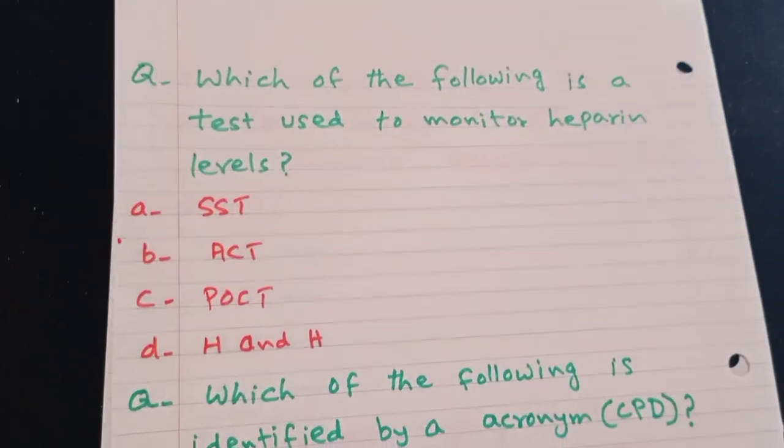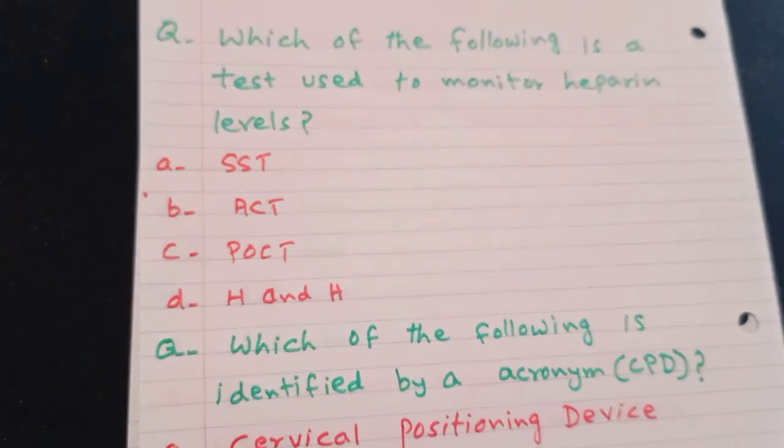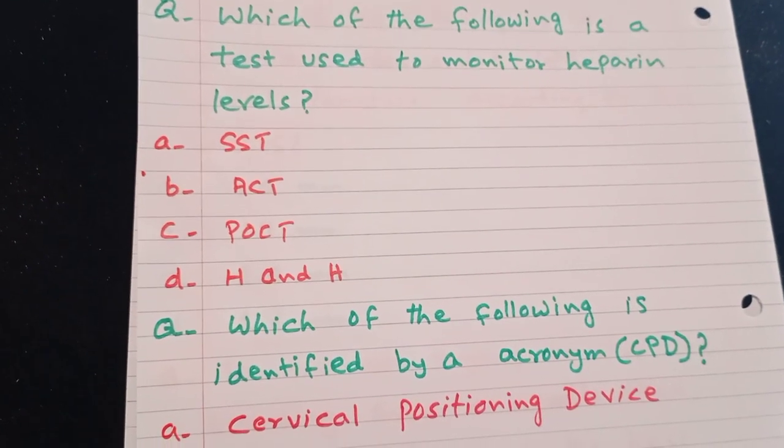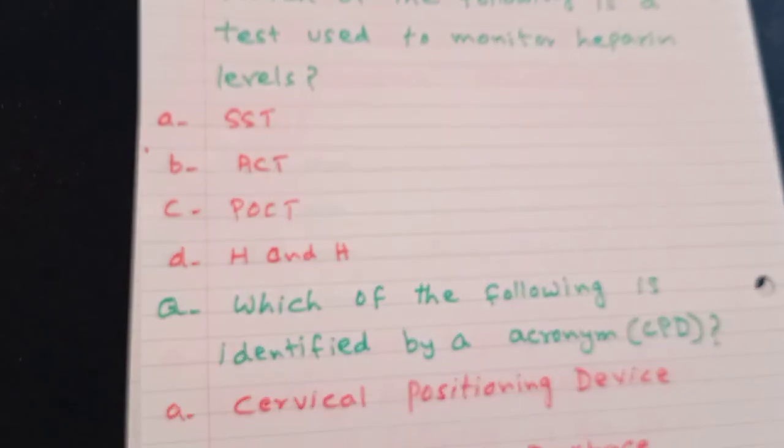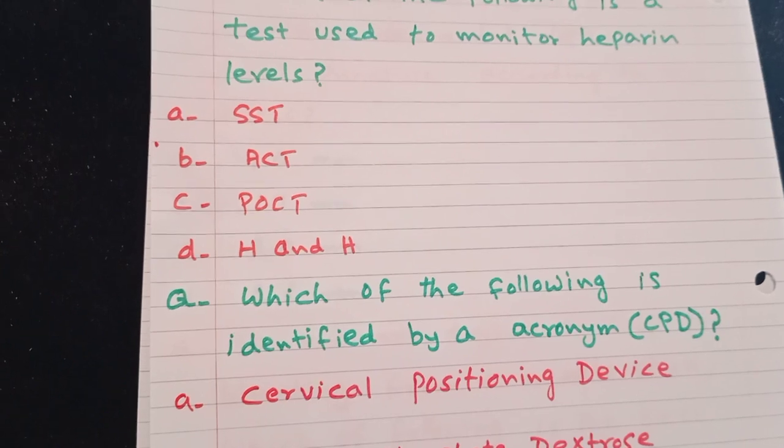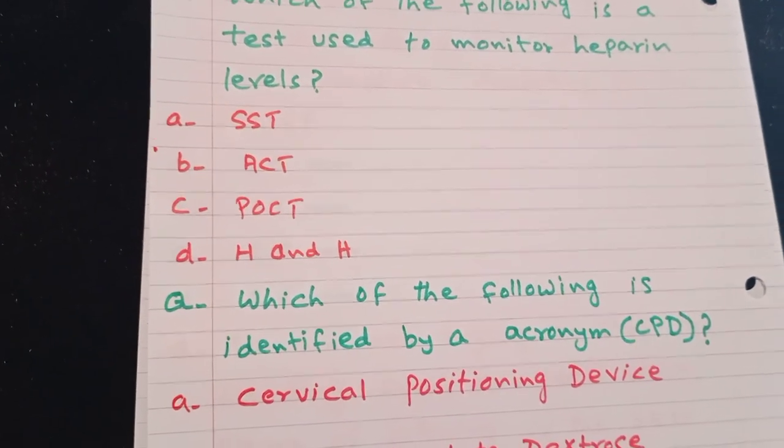Which of the following is a test used to monitor heparin levels? SST, ACT, POCT, H and H. The answer is B, ACT is used to monitor heparin levels.